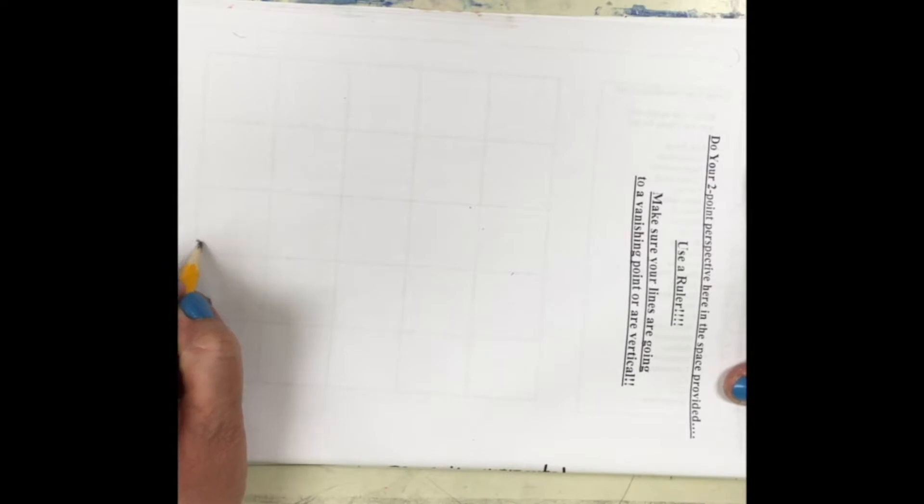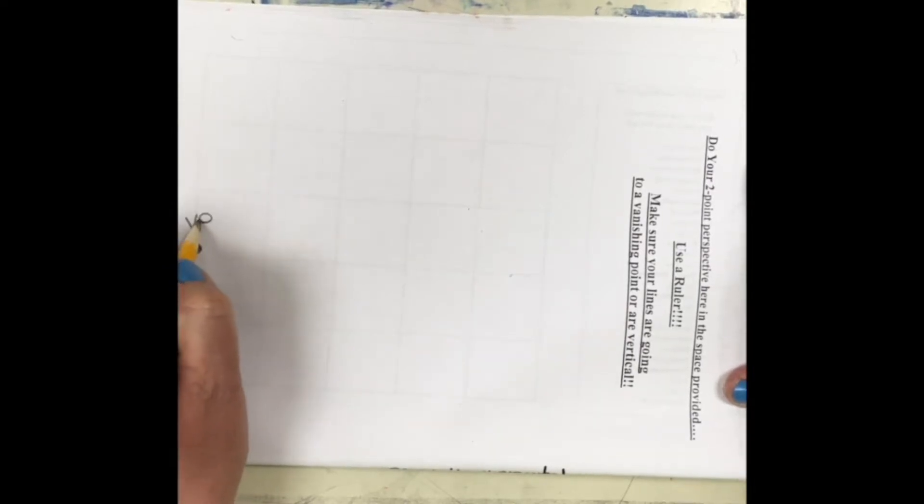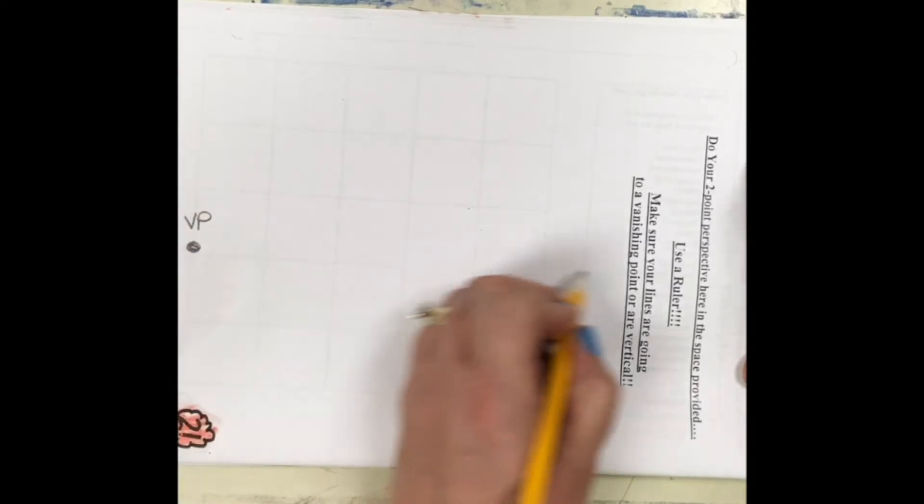For two-point perspective, you're drawing the illusion of a flat object, or of a two-dimensional object in flat space.